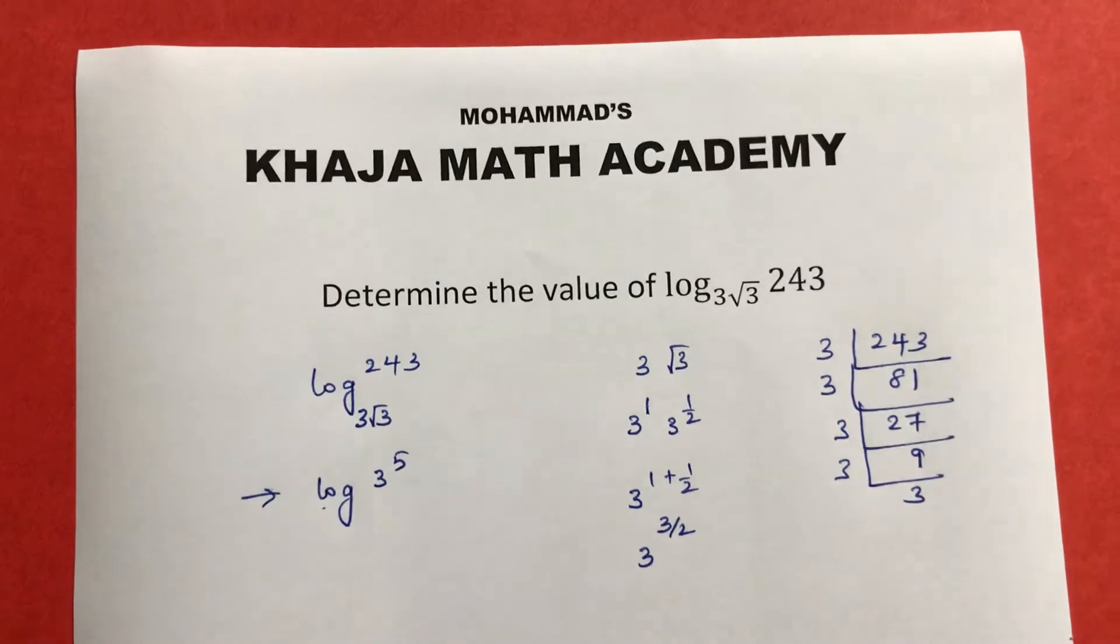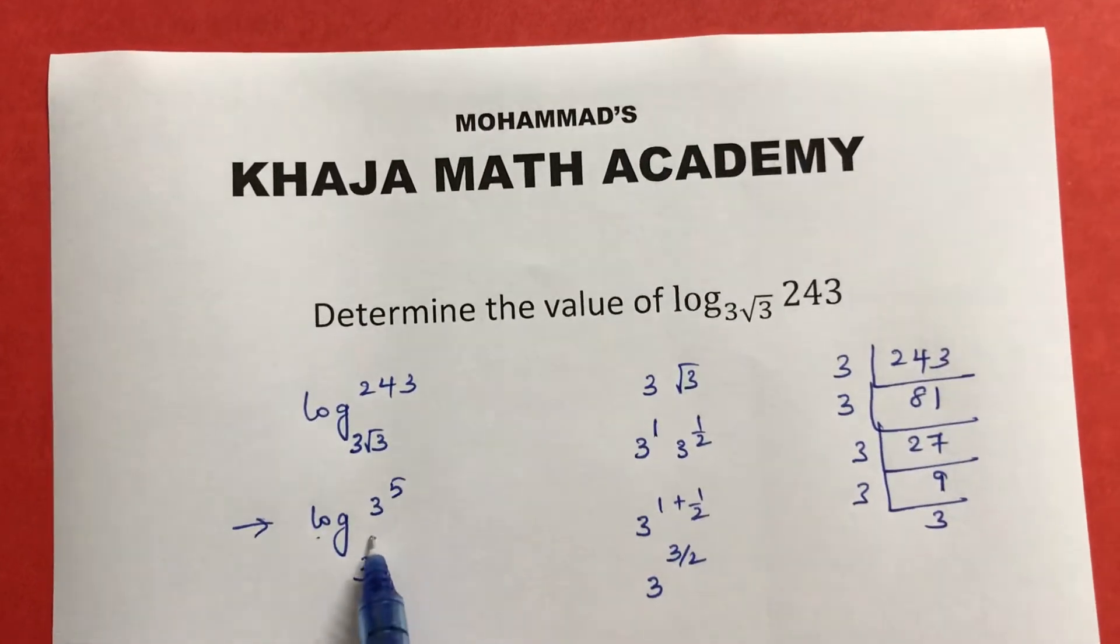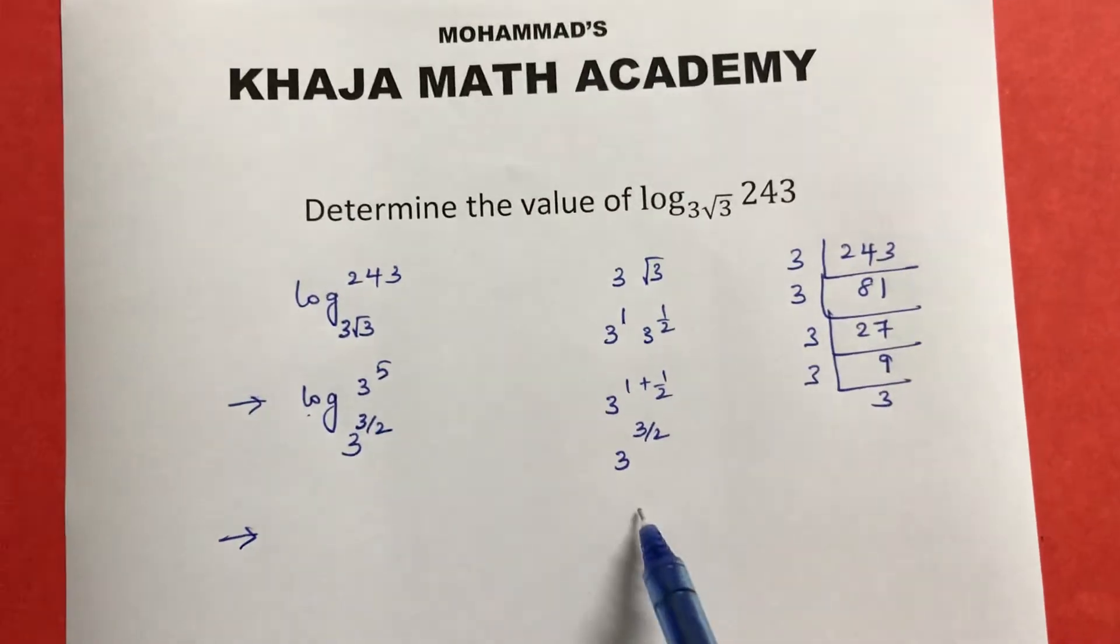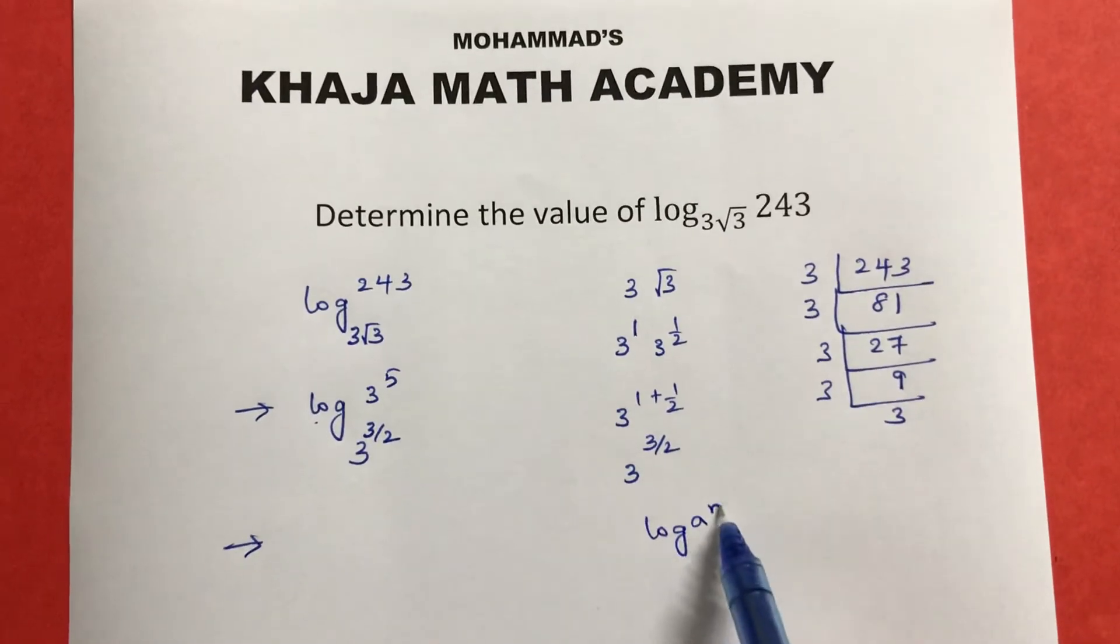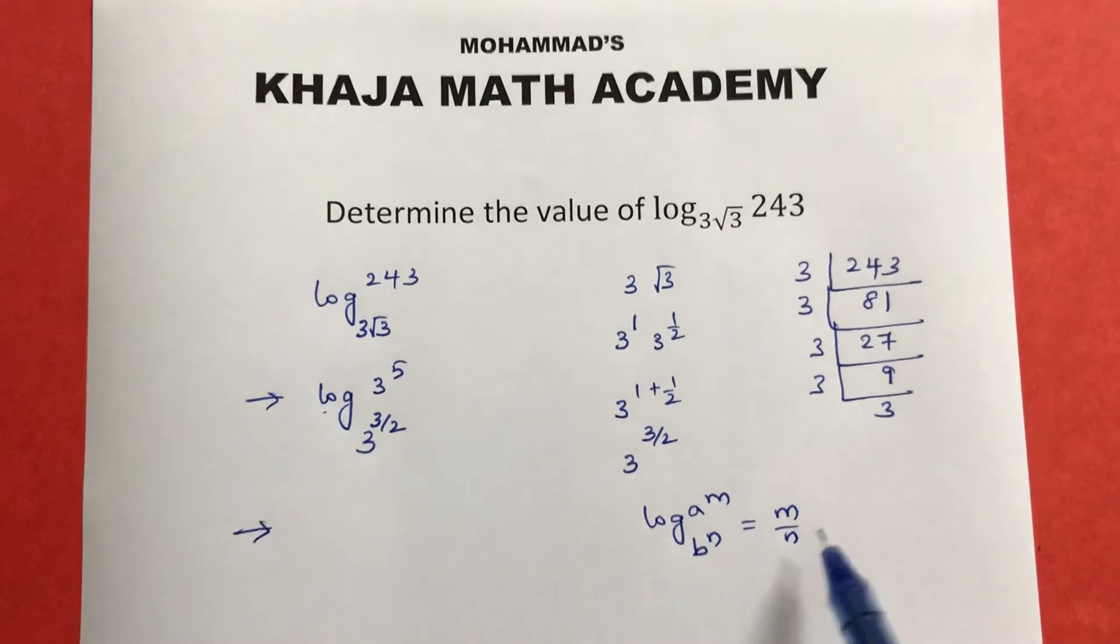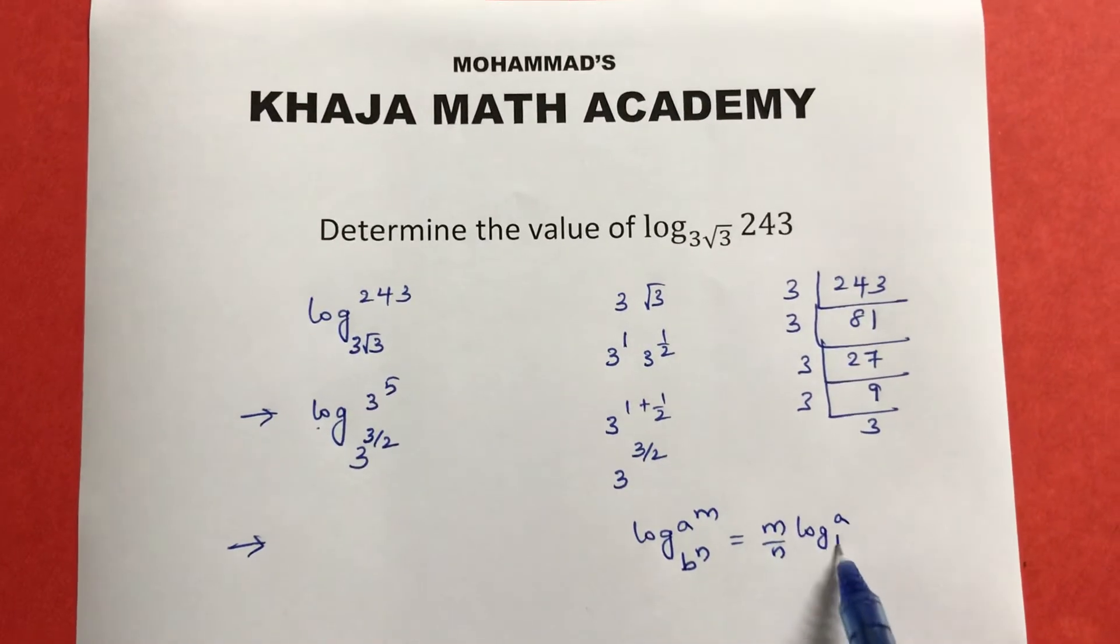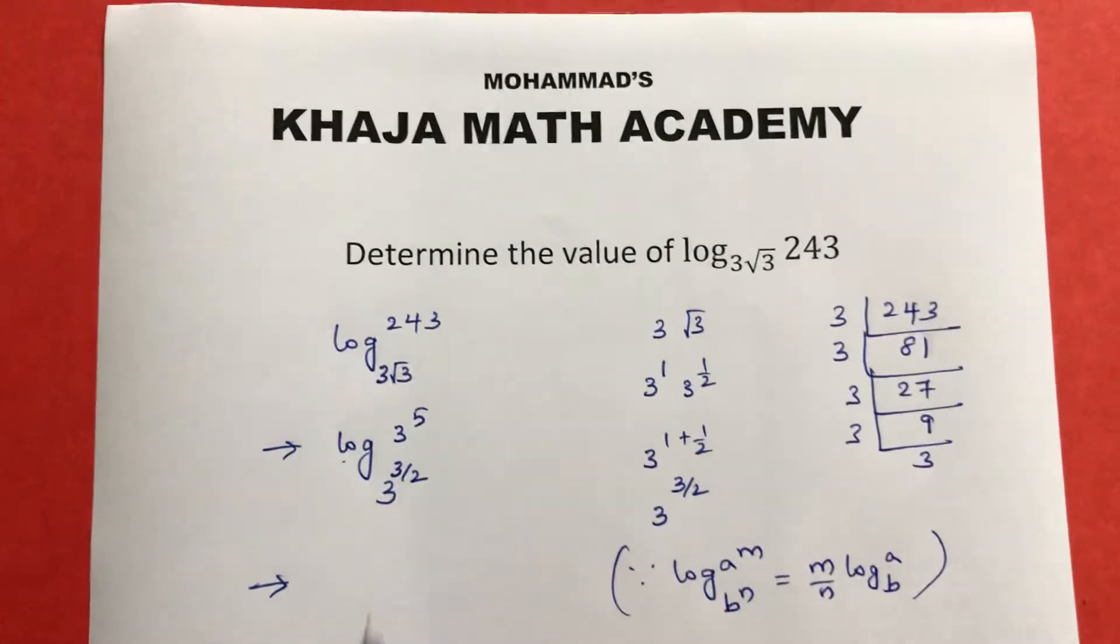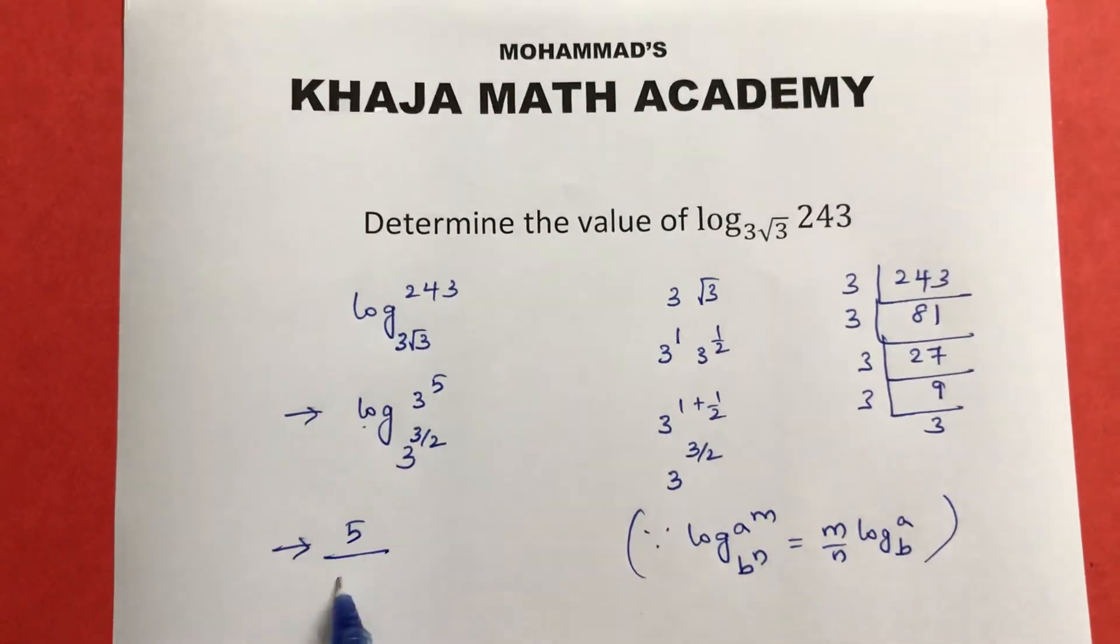3 root 3 can be written as 3 power 3/2. Now this is in the form of log_b^n(a^m), which equals (m/n)log_b(a). So in place of m we have 5, in place of n we have 3/2, giving us (5)/(3/2) log₃(3).